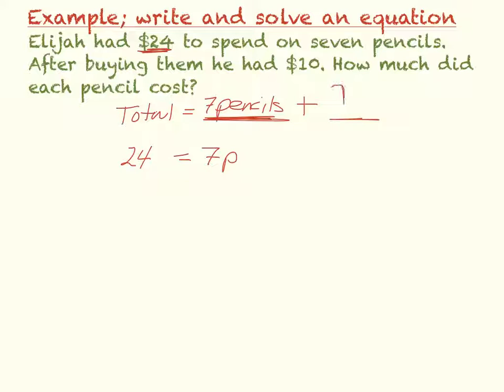because whatever the pencils cost, and then adding on the ten dollars is going to be his total amount of money that he started with. So we add on the ten dollars. So I'm just going to write plus ten.